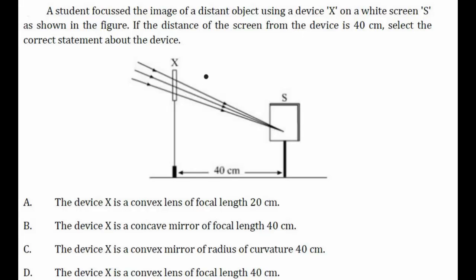The device X is on a white screen S as shown in the figure. If the distance of the screen from the device is 40 centimeters, select the correct statement about the device. So we have to first say what is the device and we have to also comment about the focal length.